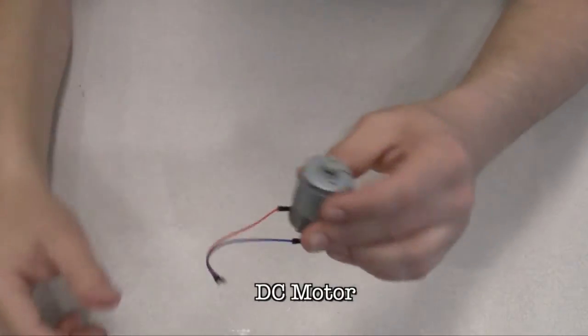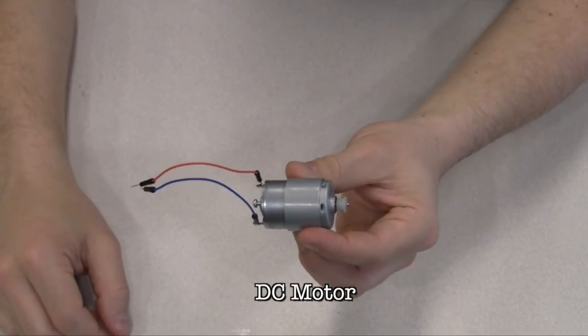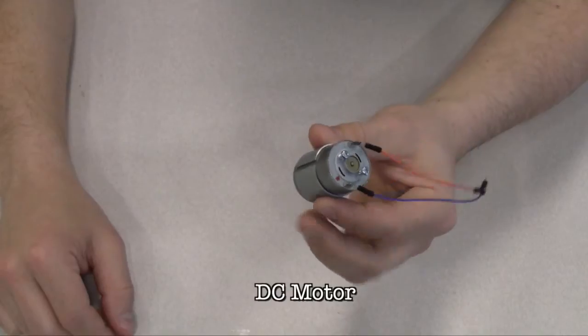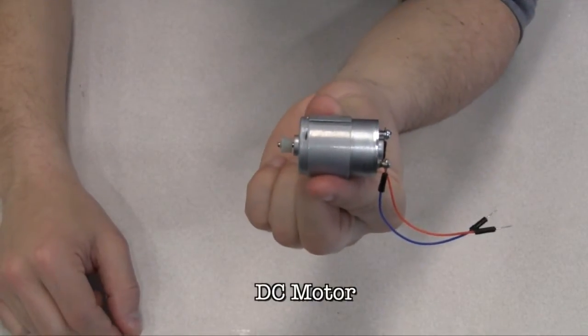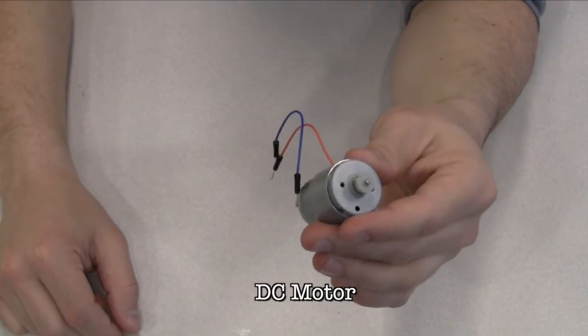A DC motor converts electrical energy into mechanical energy when electricity is applied to its leads. Coils of wire inside the motor become magnetized when current flows through them. These magnetic fields attract and repel magnets, causing the shaft to spin. If the direction of the electricity is reversed, the motor will spin in the opposite direction.